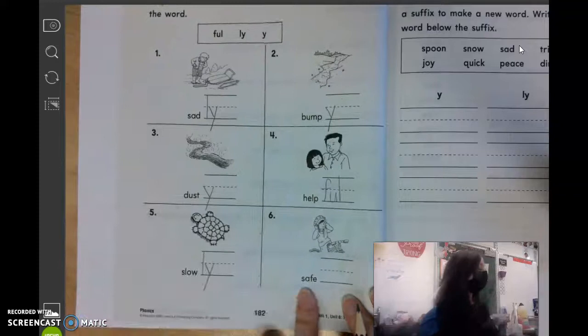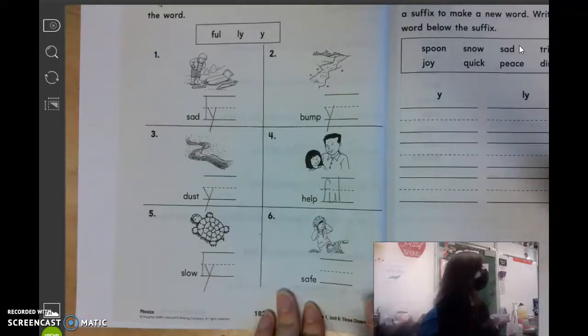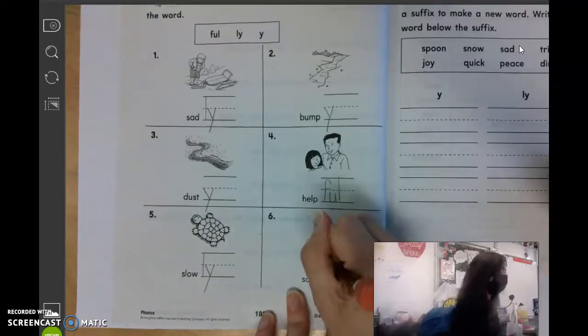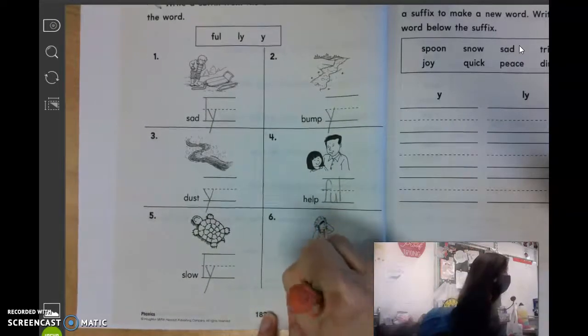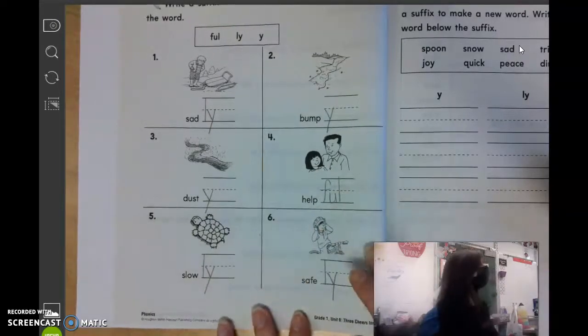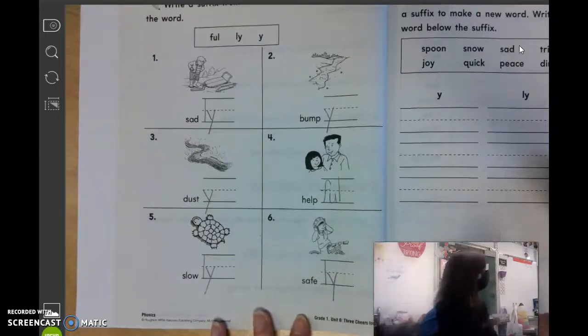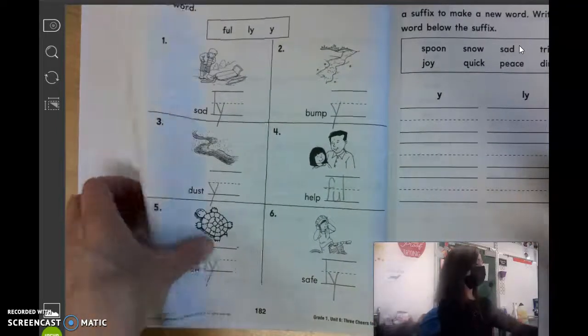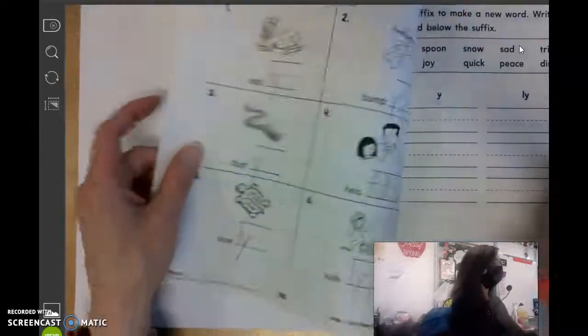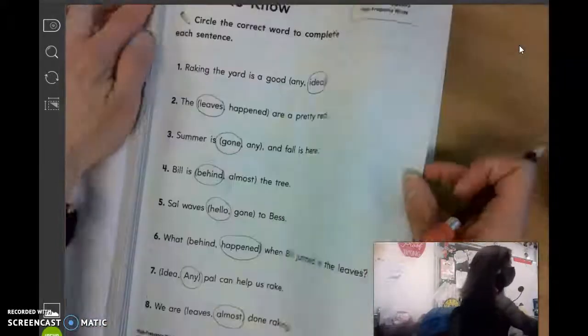And number six, safe. Kissing brown? Safely, L-Y. All right. So please get those filled in. Miles, get those filled in. And then when you are done, you can tear that page out and set it to the side.